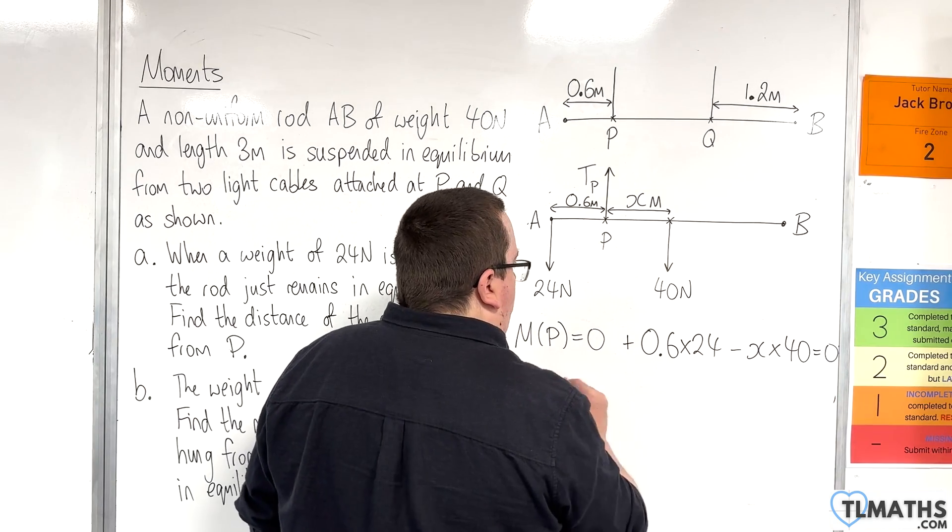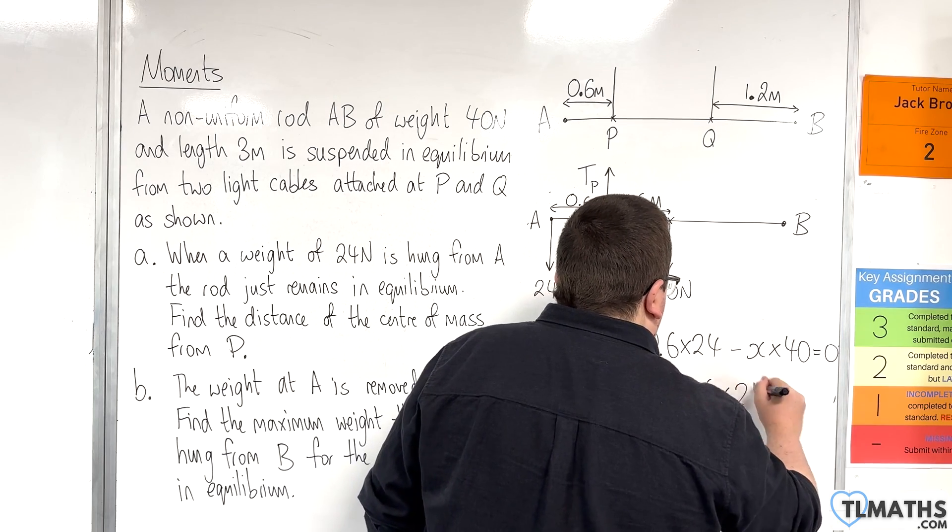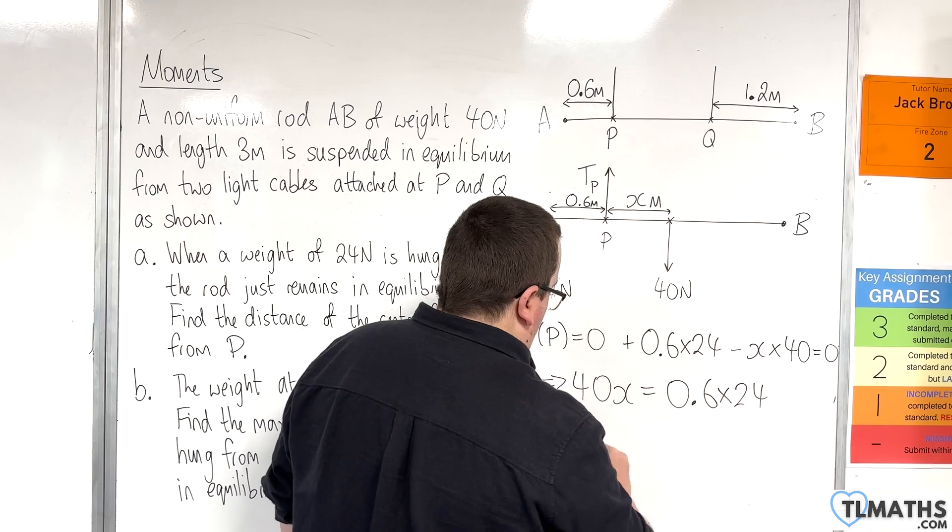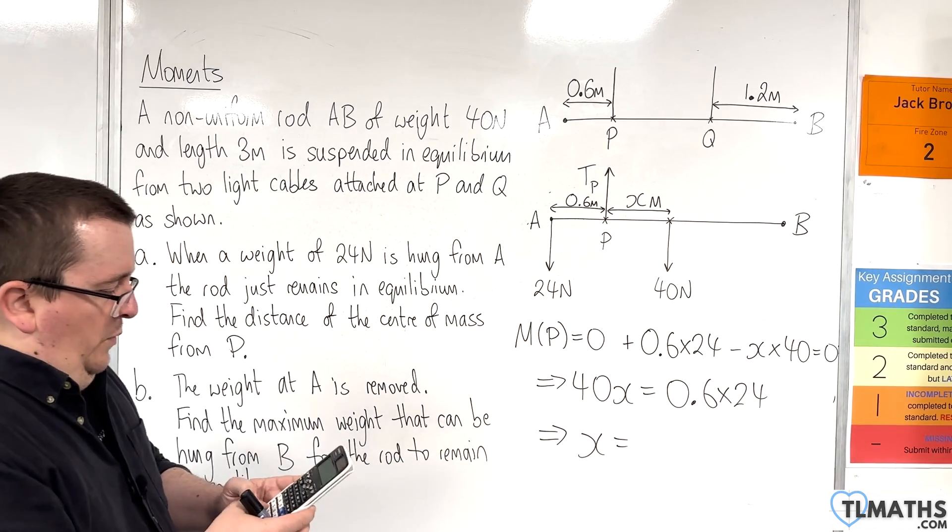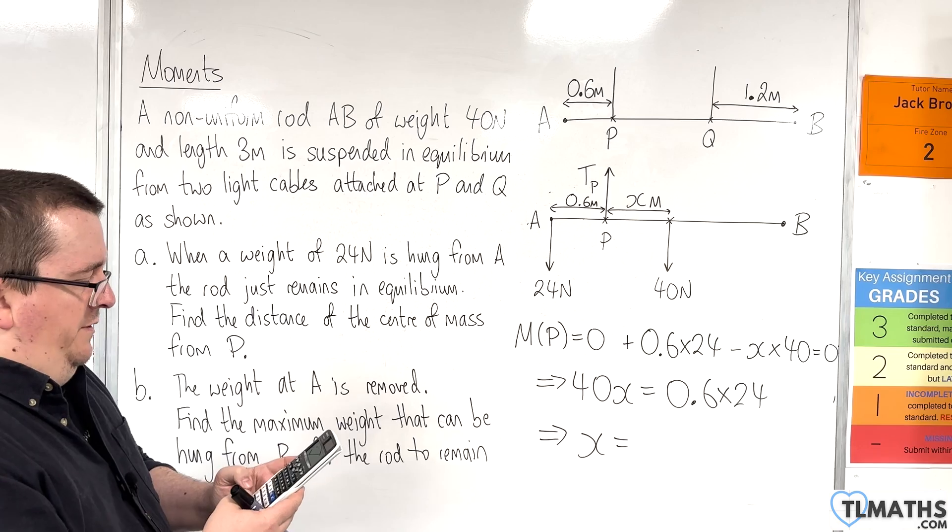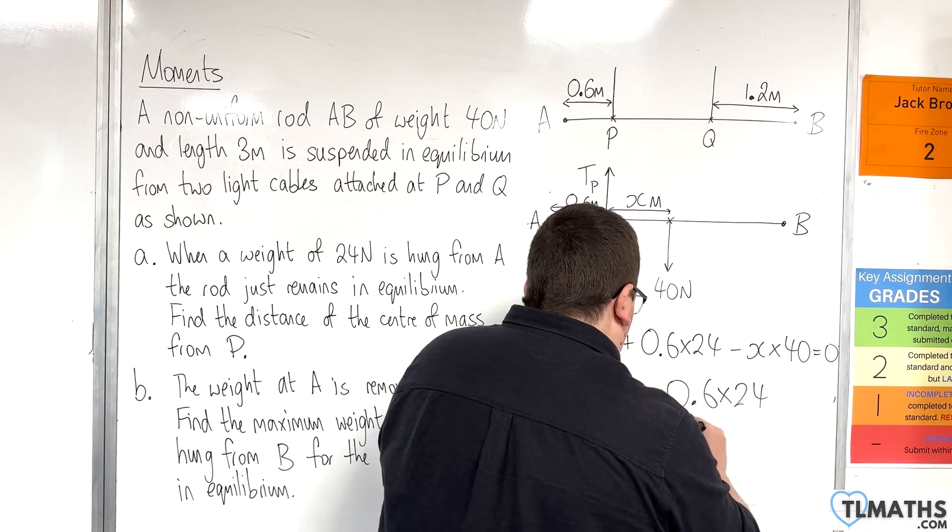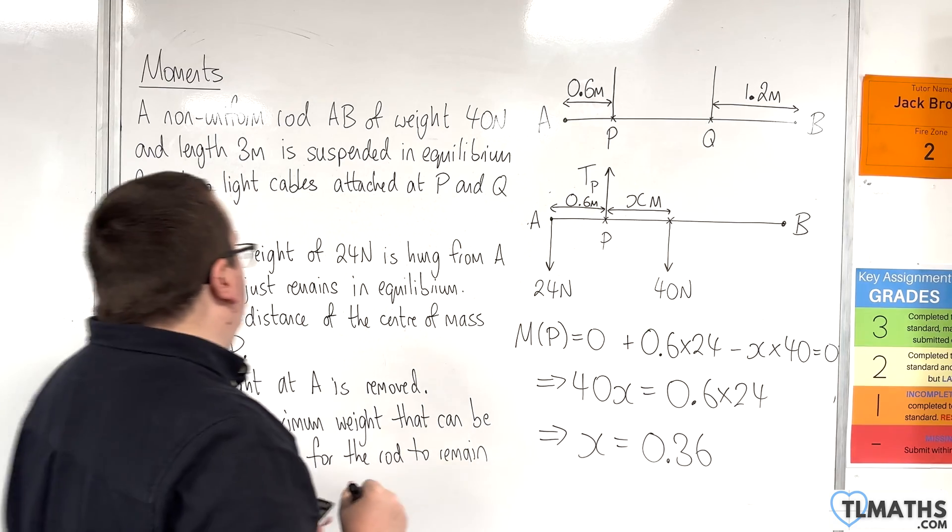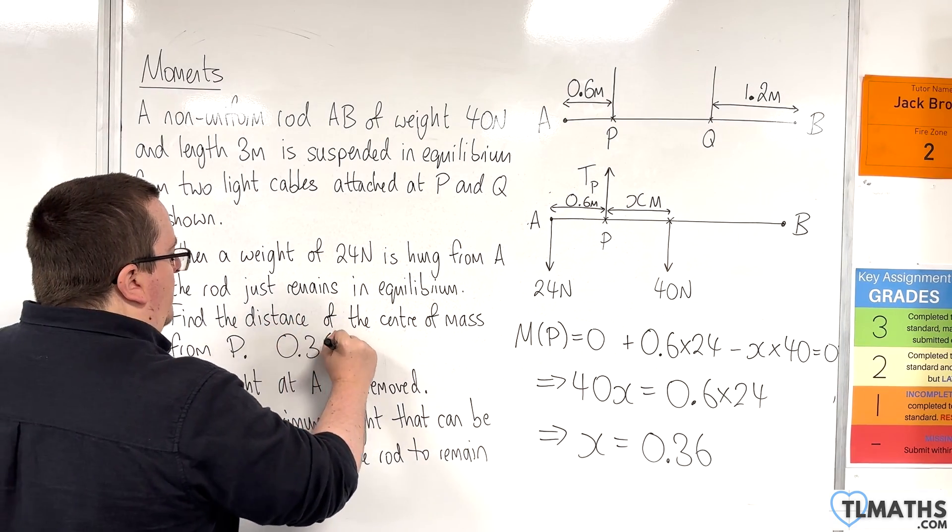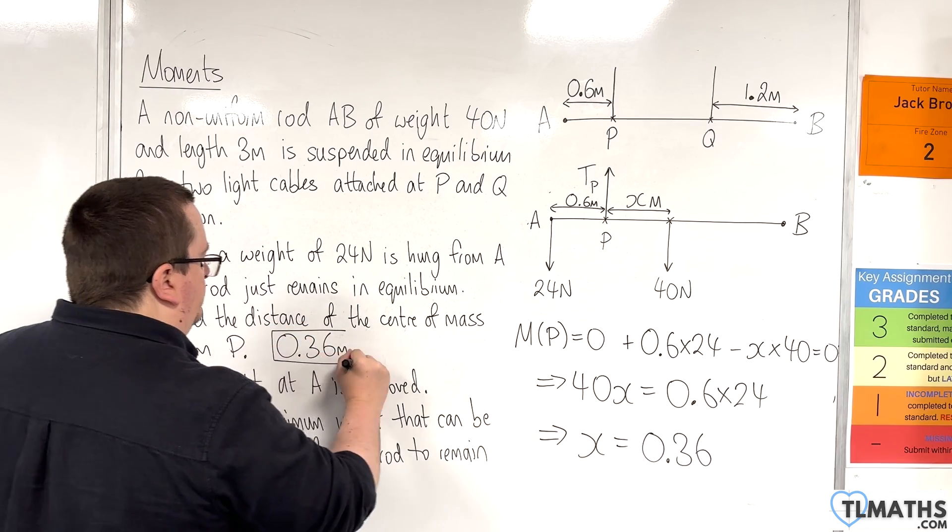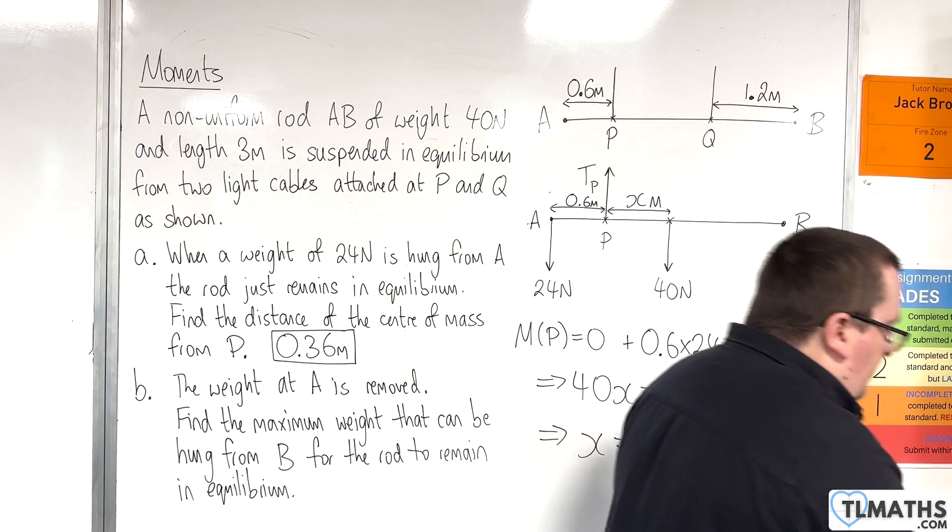So rearranging this, we're going to get 40X is equal to 0.6 times 24. So 0.6 times 24 divided by 40 is 9 over 25, so 0.36. So the distance is 0.36 metres. So that's our first bit.